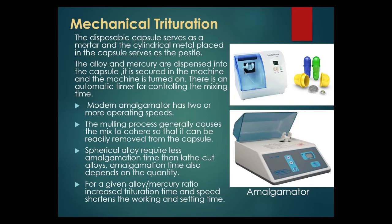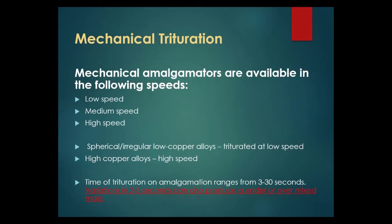Amalgamation time also depends on the quantity. For a given alloy-to-mercury ratio, increased trituration time and speed shorten the working and setting time. Mechanical amalgamators are available at low, medium, and high speeds. Spherical or irregular low-copper alloys are triturated at low speed, whereas high-copper alloys are triturated at high speed. Time of trituration ranges from 3 to 30 seconds, and variations of 2 to 3 seconds can produce under- or over-mixed mass.